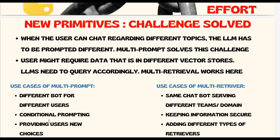To summarize the use cases: multi-prompt is useful for a different bot for different users, conditional prompting depending on the user, and providing users new choices. These things are external to the large language model — the LLM is a single entity, but depending on the instructions you provide, you can change its behavior. You've probably already seen this with ChatGPT or OpenAI APIs. For multi-retrieval, the same chatbot can serve different teams or domains.